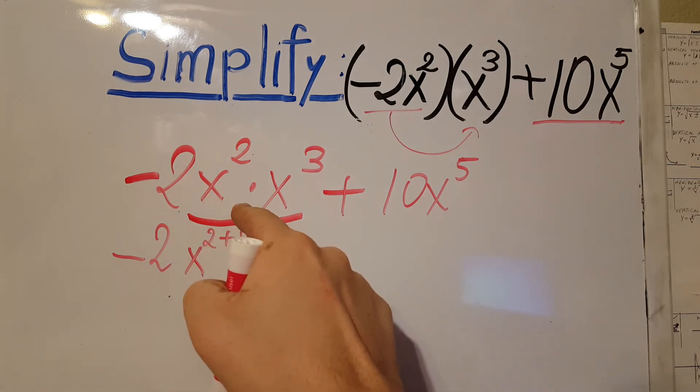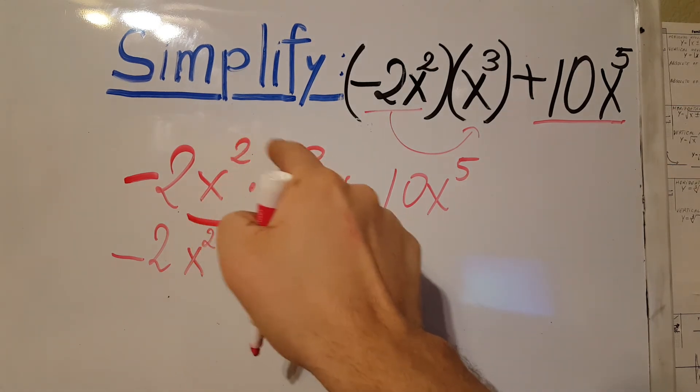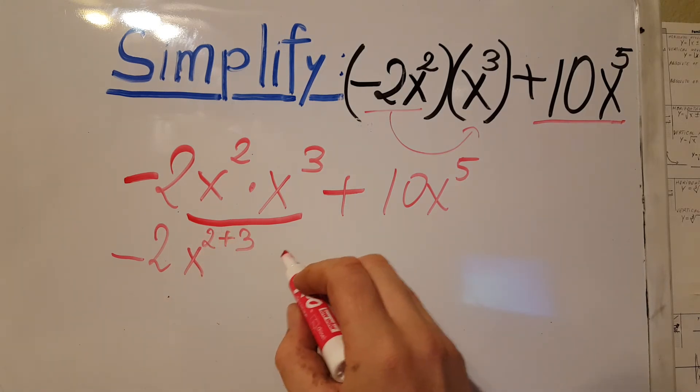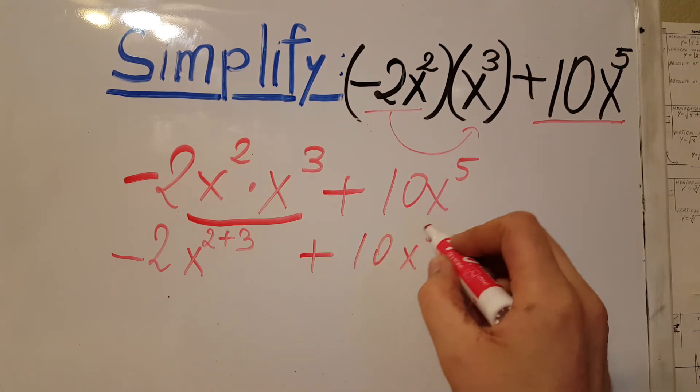When we are multiplying, we're gonna add the exponents, so therefore we're gonna get x on the power of 2 plus 3, and plus 10x to the 5. We still didn't do nothing with this one.